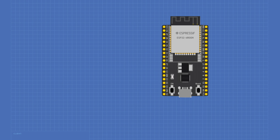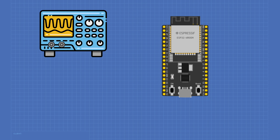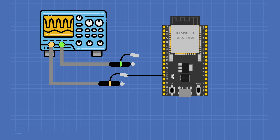For the oscilloscope art experiment, we need an ESP32 and a two-channel oscilloscope. Connect probe A ground to the ESP32 ground and its input to GPIO pin 25. Connect probe B input to GPIO pin 26 — its ground connection is optional since the other probe is already grounded. Set the scope to XY mode, and this completes the connections.